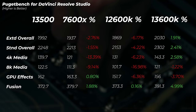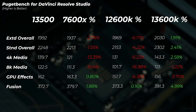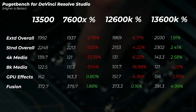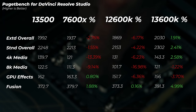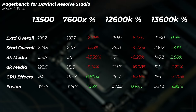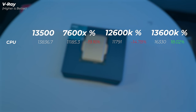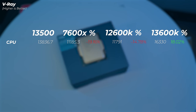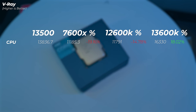In DaVinci Resolve, the 7600X is only a few percent slower — about 2.7% and 1.5% on standard and extended overall scores — though the 4K media score is notably slower. GPU effects and Fusion scores are slightly faster on the 7600X. The 12600K is about 4–6% slower on extended overall scores. The 13600K is only slightly faster — about 2–2.5% — so the 13500 is very close to the 13600K here. In V-Ray, the 7600X is about 20% slower, the 12600K about 15% slower, but the 13600K is about 18% faster.